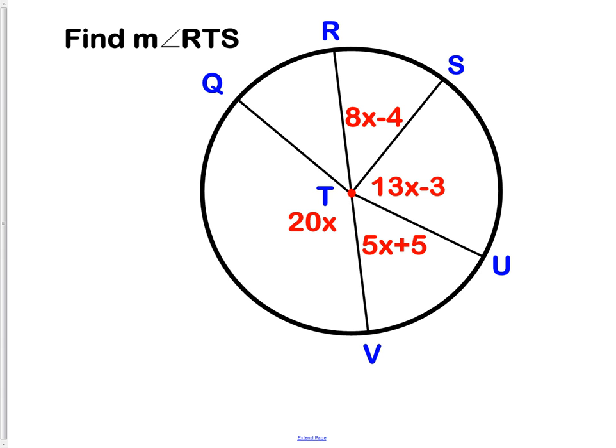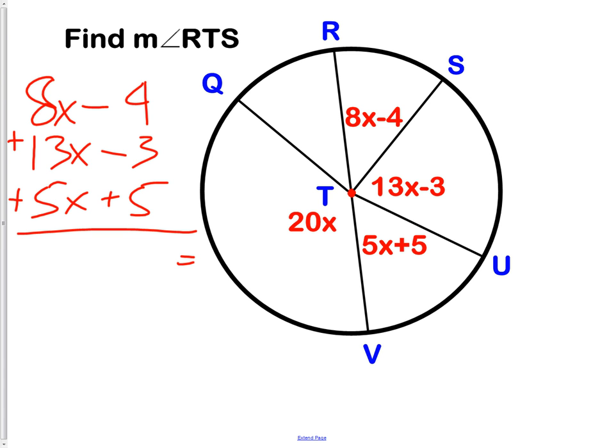Our next question is, find the measurement of angle RTS. RTS would be the angle right there. Again, we have to figure out its measurement. Now in this question, we don't exactly know, right off hand, which pieces to use, because we have four different pieces and we're actually missing one of the central angles. As I look at the picture, I think the easiest place to go is going to be to use that semicircle right there. So I'm going to use 8X minus 4 plus 13X minus 3 plus 5X plus 5 and have that all equal 180 degrees. Adding that together, I get 26X minus 2 equals 180. Notice I'm not even using the 20X. That wasn't needed to actually solve my question.